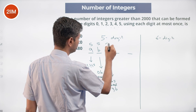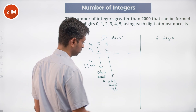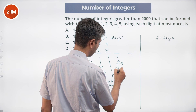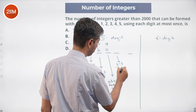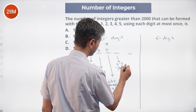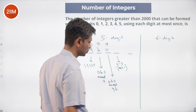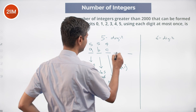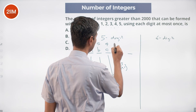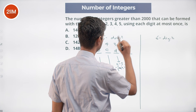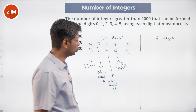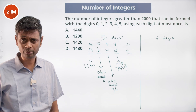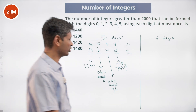For the remaining positions: five options for the second digit (subtracting A), four options for the third (subtracting A and B), three options for the fourth (subtracting A, B, and C — out of six we subtract three). So the total number of five-digit numbers is 5 × 5 × 4 × 3 = 300.